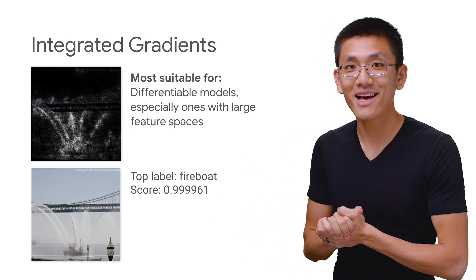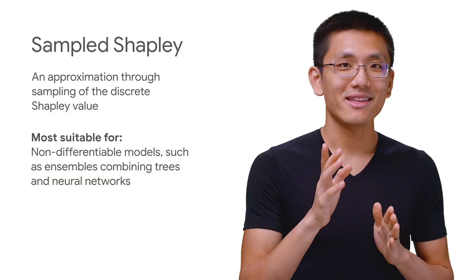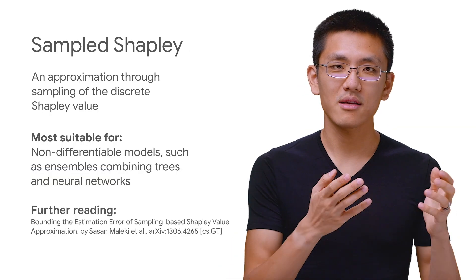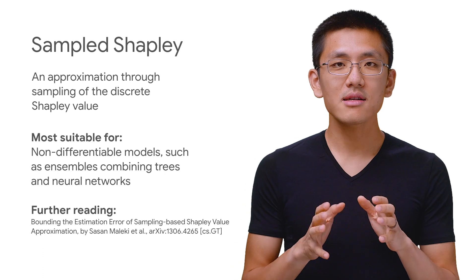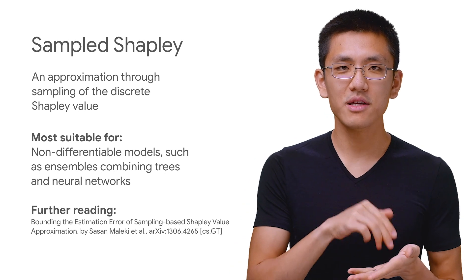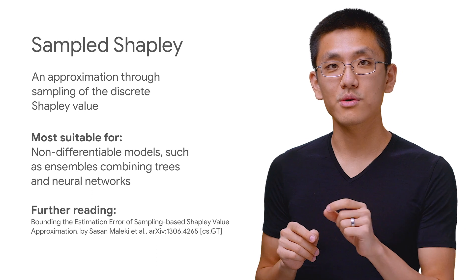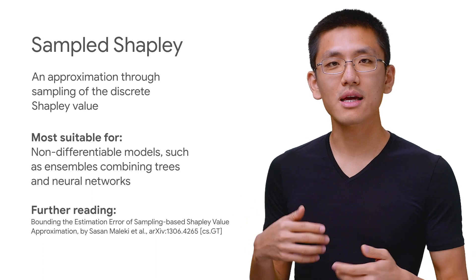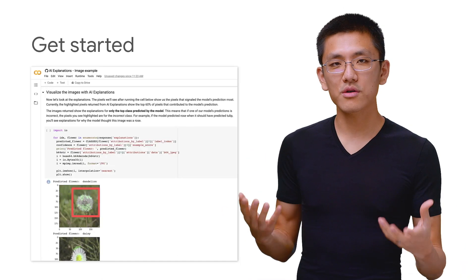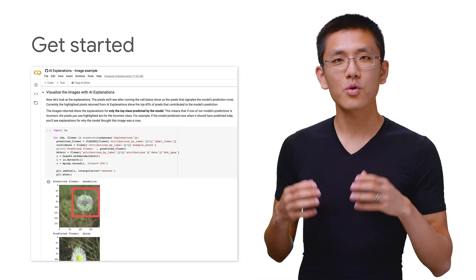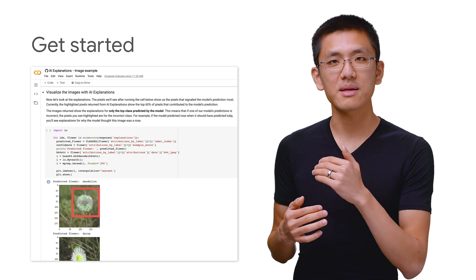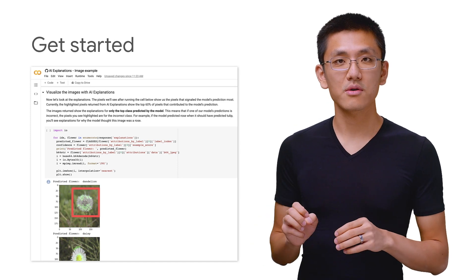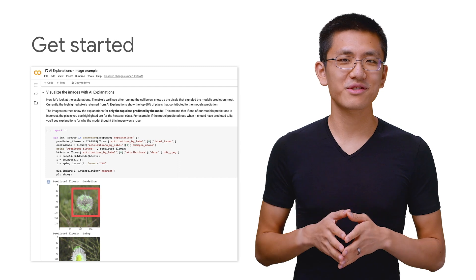Now let's talk briefly about the other feature attribution method, sampled Shapley. It assigns credit for the outcome of each feature and also considers different permutations of those features, and is most suitable for non-differentiable models, like ensembles of trees. There are a number of articles and research papers which dive way deeper into these explainability methods, which I've linked to below. They're all very well-written and super interesting to read, so if you like these topics, I would encourage you to dive in and check them out.